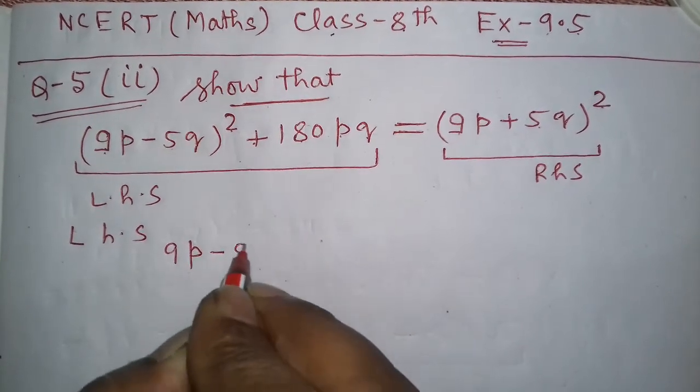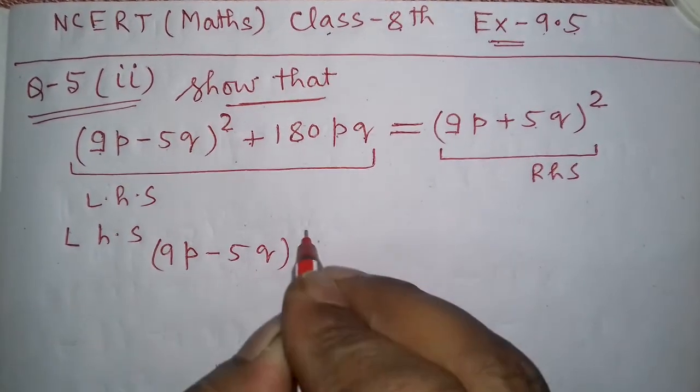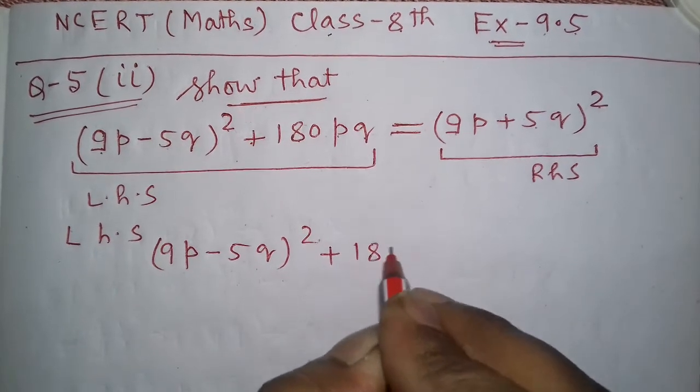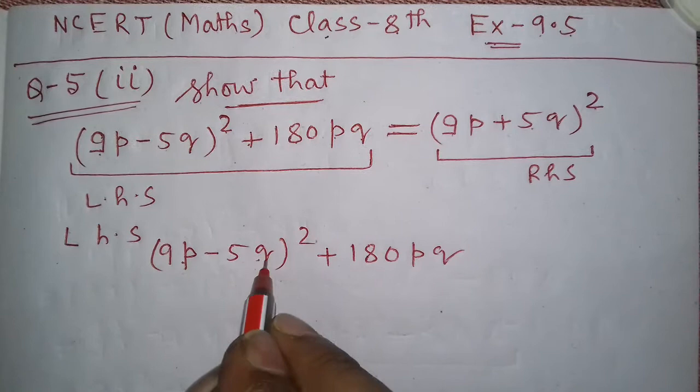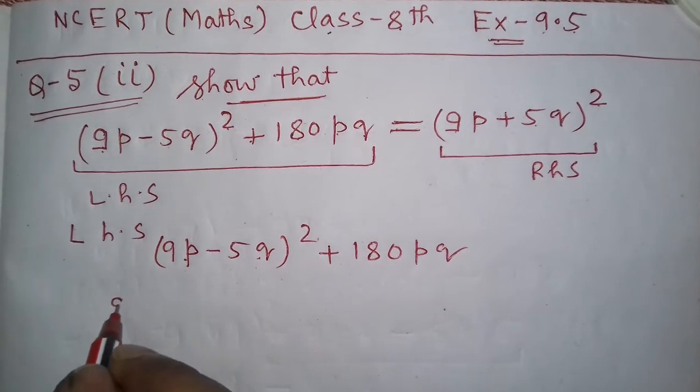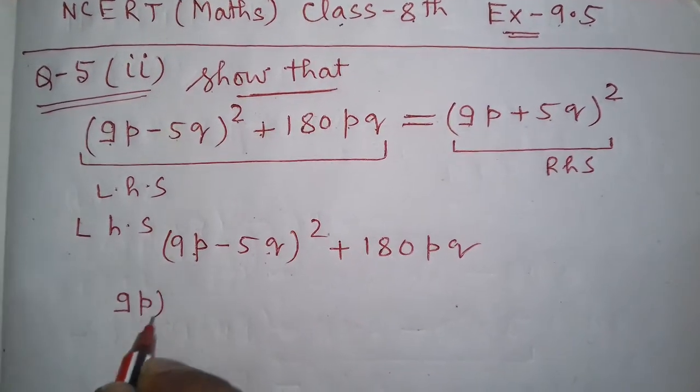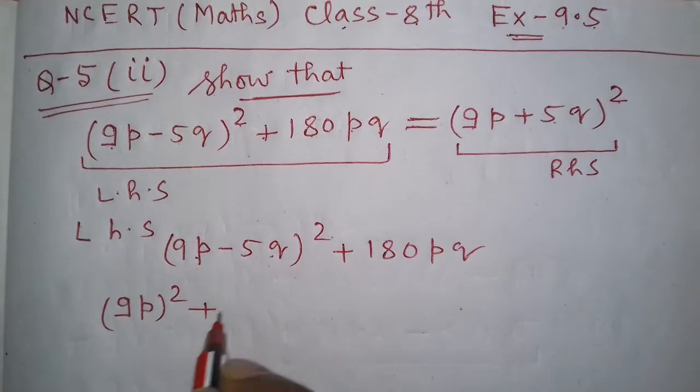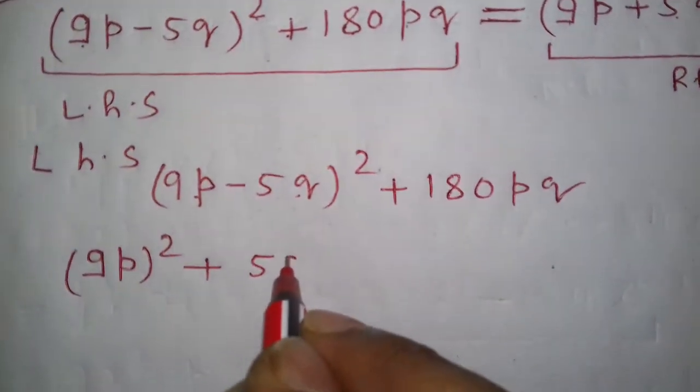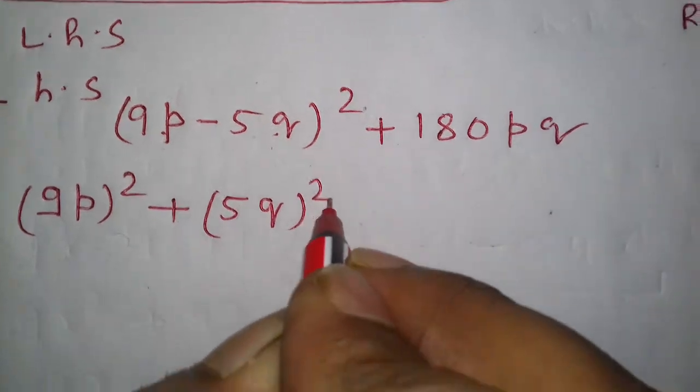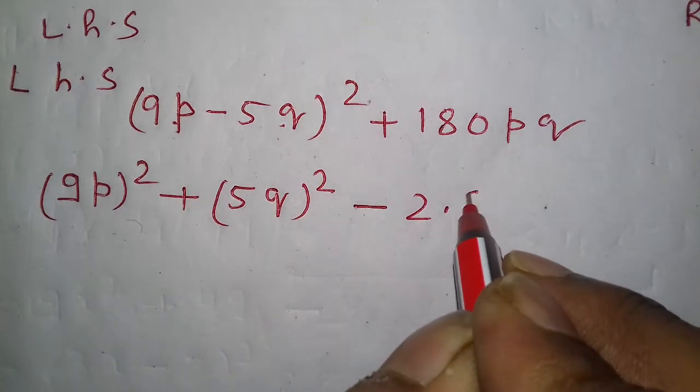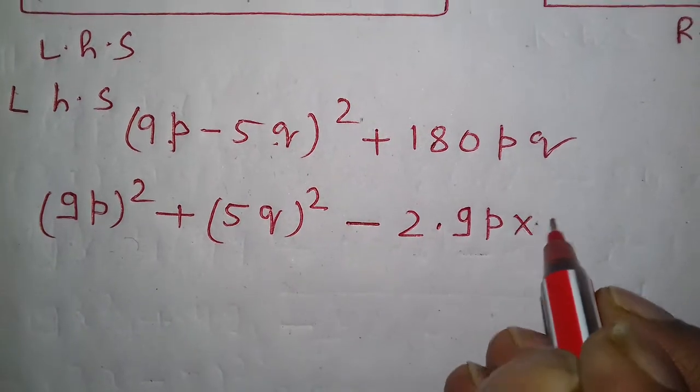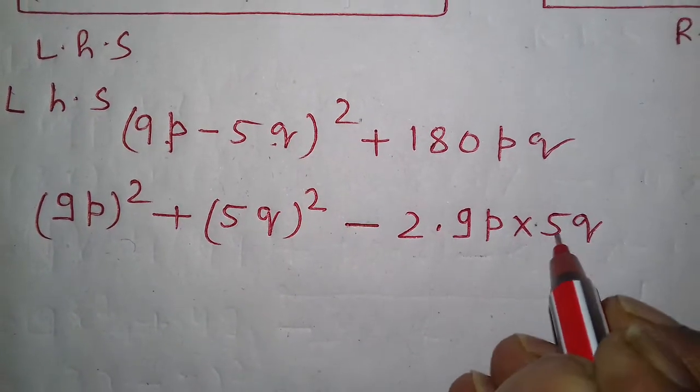(9p - 5q)² + 180pq. This is (a - b)². That means first squared, that is (9p)², plus second squared, that is (5q)², minus 2 times first, that is 9p, multiplied by 5q.